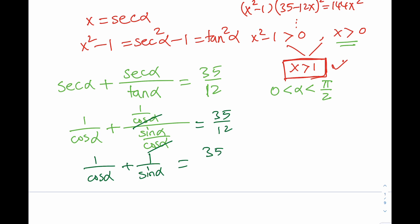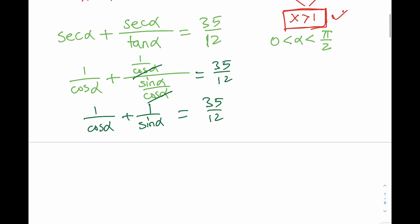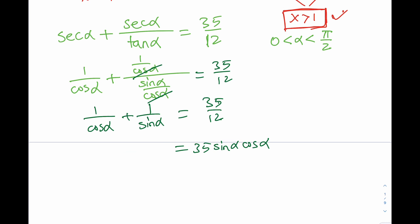So we have the sum of reciprocals. Let's clear the fractions by making a common denominator. Multiplying through, the numerator becomes sine alpha plus cosine alpha multiplied by 12, so it's 12 times sine alpha plus cosine alpha. The denominator side becomes 35 times sine alpha times cosine alpha. So our equation is: 12 times (sine alpha plus cosine alpha) equals 35 times sine alpha times cosine alpha.